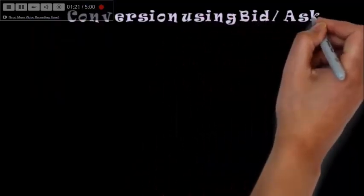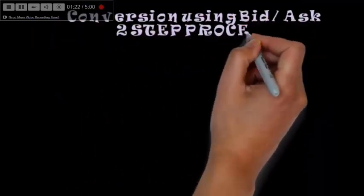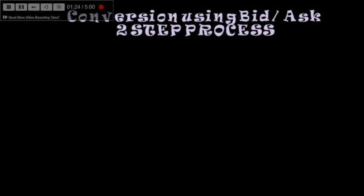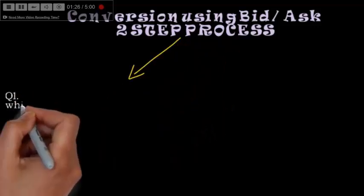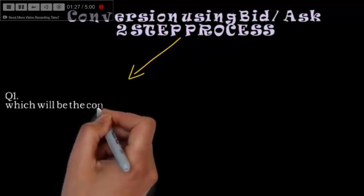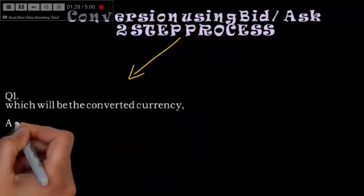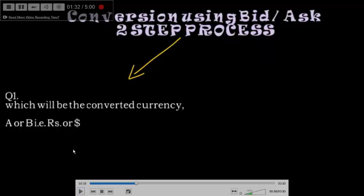Conversion using bid and ask rate I call a two-step process or two questions that we need to answer. Question 1: which will be the current converted currency, A or B? That is rupee or dollar.